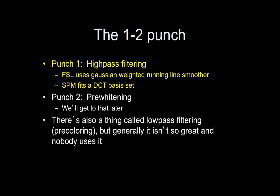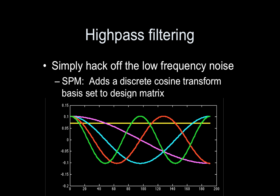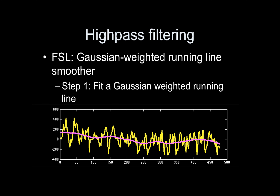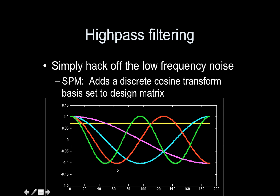I'm going to talk about the types that FSL and SPM use. AFNI also uses what SPM does, which is a discrete cosine transform basis set. FSL uses a Gaussian weighted running line smoother, which is much simpler than it sounds. The high-pass filter simply hacks off the low-frequency noise — you are just removing it. That's important because if you're going to hack off that frequency, you don't want your task in this low-frequency band. SPM and AFNI use a DCT basis set — just a set of cosine functions of various frequencies — added as regressors to the design matrix to remove the drift.